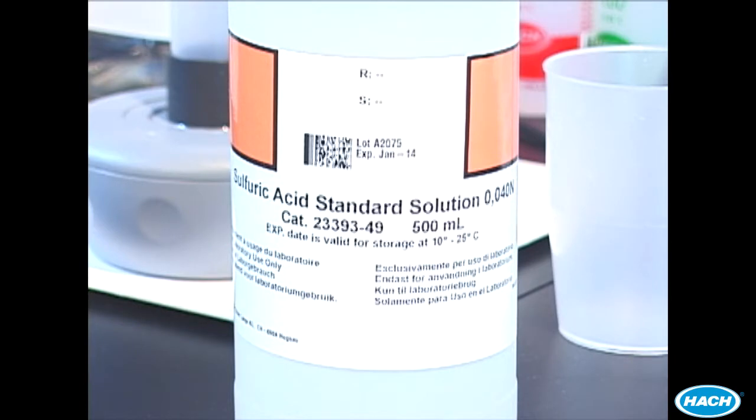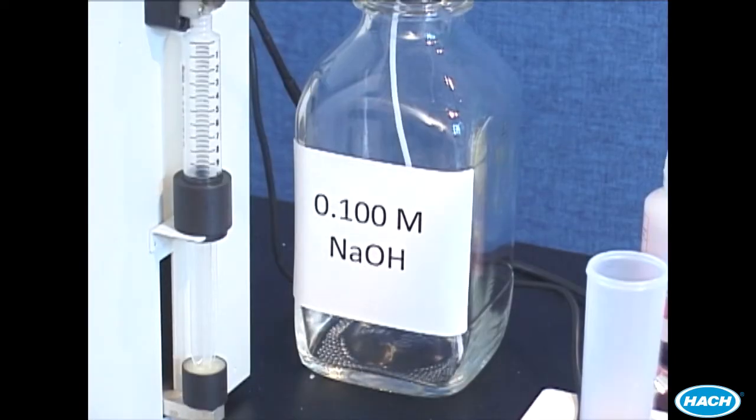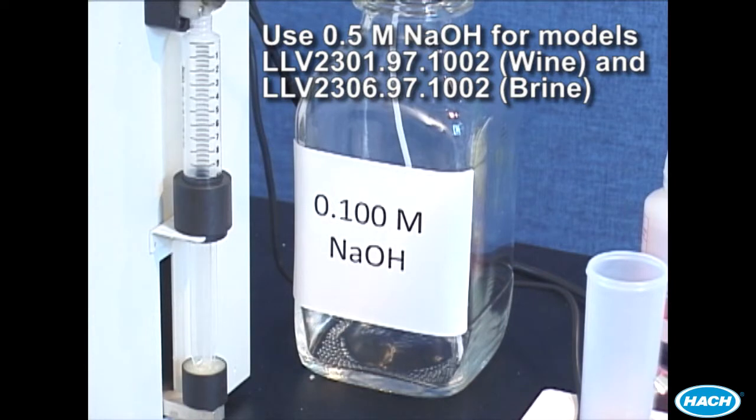We will use 0.1 molar sodium hydroxide as the titrant in this demonstration. Some methods use 0.5 molar sodium hydroxide titrant. This will also work but the expected results will be different. In this video the results for 0.5 molar sodium hydroxide will also be shown.